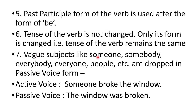Vague subjects like 'someone,' 'somebody,' 'everybody,' 'everyone,' 'people,' etc. are dropped in passive voice. For example, 'Someone broke the window' — when converting to passive voice, 'the window' (object in active) becomes the subject in passive. 'Was' is the form of be according to tense, and 'broken' is the third form of verb. So it becomes 'The window was broken.' The phrase 'by someone' is dropped because it is understood by the reader.